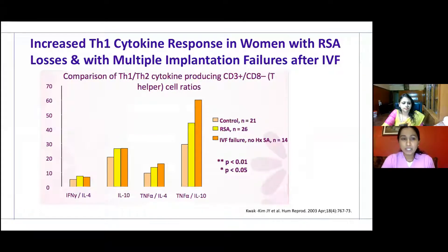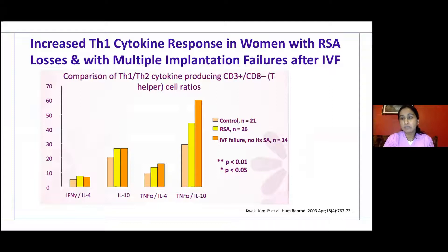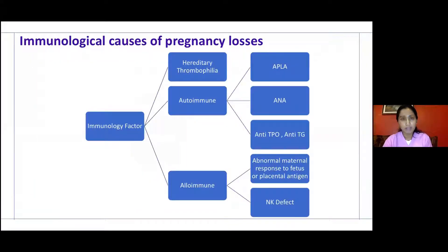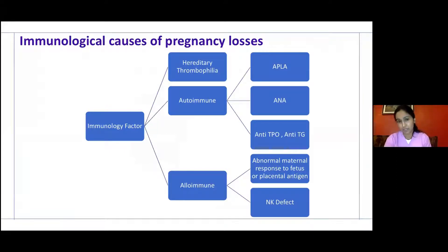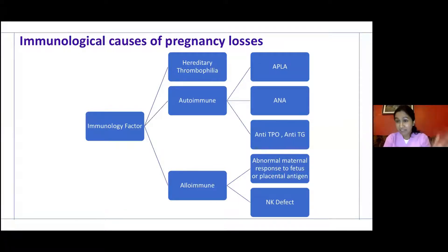This graph shows the comparison of T helper 1 and T helper 2 cytokine-producing cell ratios. Coming to the immunological causes of pregnancy loss: hereditary thrombophilia is not strictly an immunological factor, but thrombus formation could be an inflammatory response. The autoimmune causes include the well-known APLA, anti-nuclear antibodies, anti-TPO, and anti-TG.